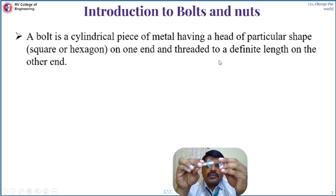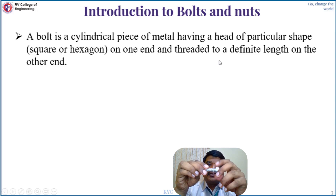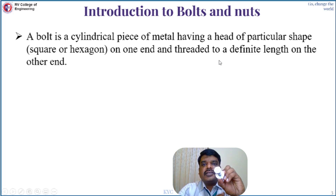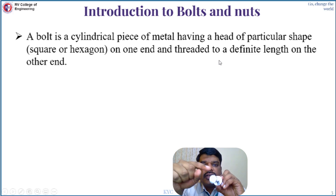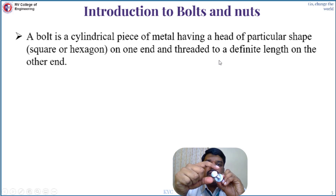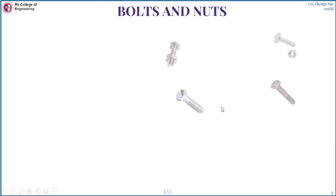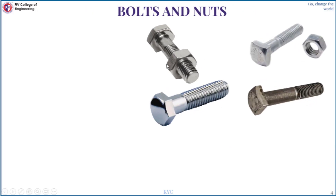This is a washer and this is a nut which can be assembled. You can see the head portion — there are six sides on this head, so that's why it's called a hexagonal head. Similarly we have a square headed bolt. As you can see in the images, there are hexagonal head bolts as well as square headed bolts.